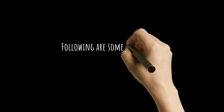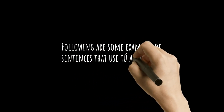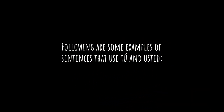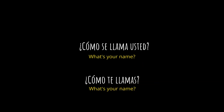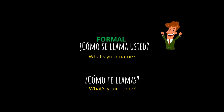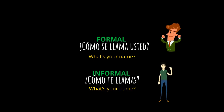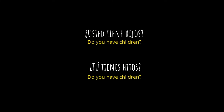Here are some examples using both tú and usted side by side. '¿Cómo se llama usted?' versus '¿Cómo te llamas?' — both mean 'what's your name?' However, the first is formal (usted) and the second is informal (tú). '¿Usted tiene hijos?' versus '¿Tú tienes hijos?' — both mean 'do you have children?' — formal on top, informal below. '¿Usted está bien?' versus '¿Tú estás bien?' — formal versus informal for 'are you well?'